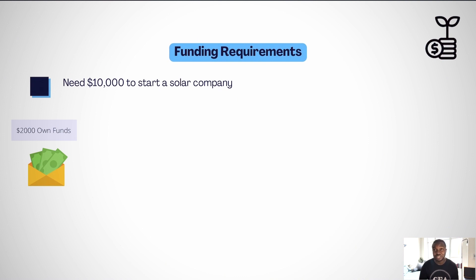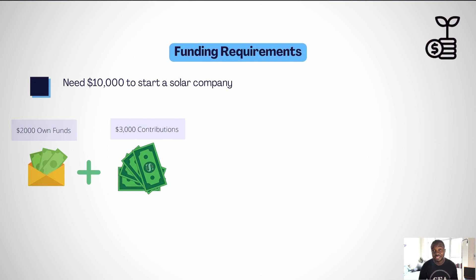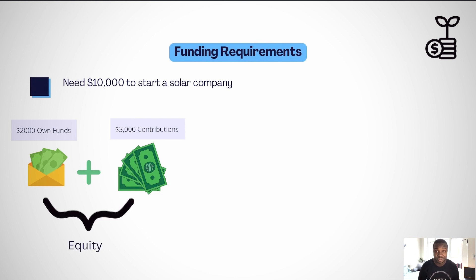So he goes to his family members, presents this business idea, and asks them for financial support. Some of his family members are convinced that this business venture will be profitable and decided to invest $3,000 in exchange for 30% ownership of the company. Now he has $5,000 to start the business, and this is the equity in the business, also known as owner's equity or shareholders' equity.